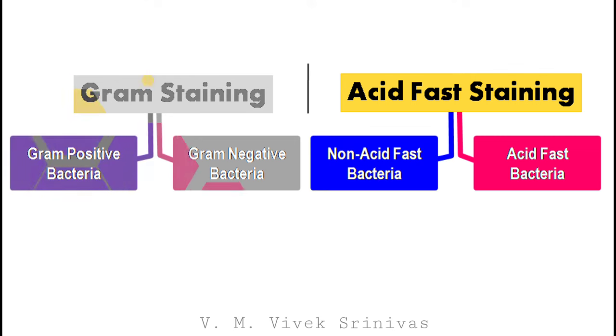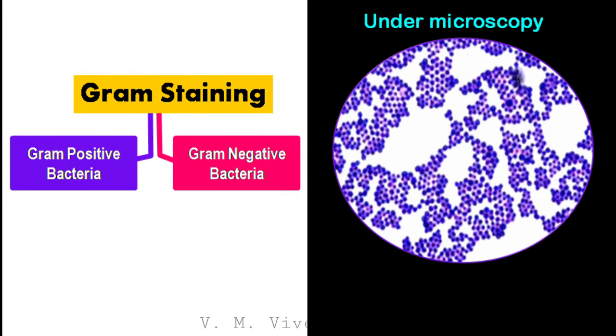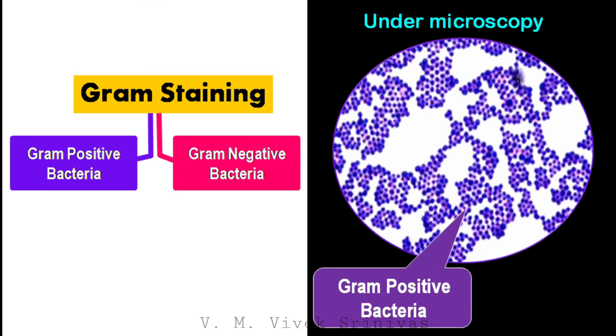So after gram staining on microscopic examination, if the organisms are stained deep violet, then they are the gram positive bacteria.